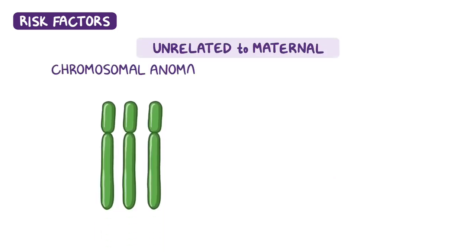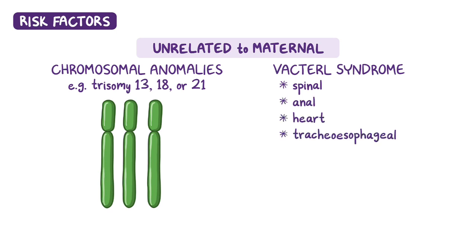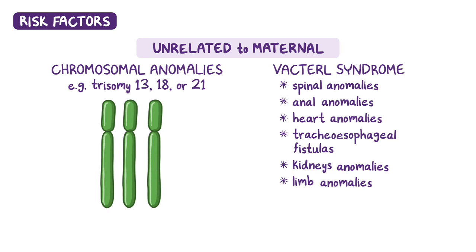Risk factors unrelated to maternal ones include chromosomal anomalies like trisomy 13, 18, or 21, and VACTERL syndrome, which is associated with spinal, anal, heart, tracheoesophageal fistulas, kidneys, and limb anomalies.